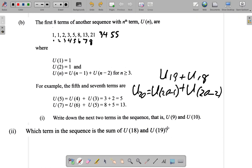That term in the sequence is U(20), the sum of U(18) and U(19).